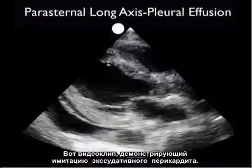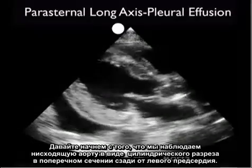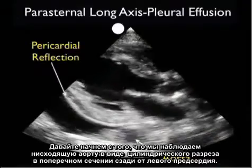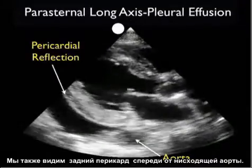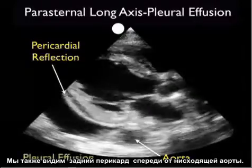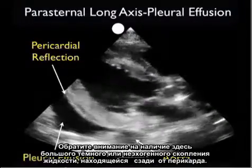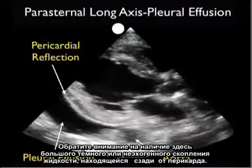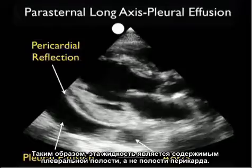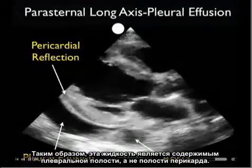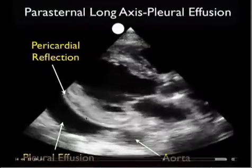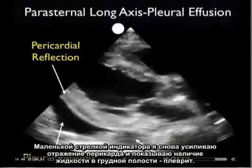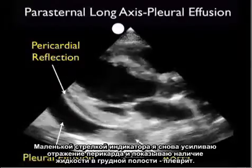Here's a video clip showing a potential mimic of a pericardial effusion. Let's begin by identifying that descending aorta as a cylinder cut in cross section posterior to the left atrium, and we identified the posterior pericardium coming off just anterior to the descending aorta. Note the presence of a large dark or anechoic fluid collection, but note that it layers out posteriorly to the pericardium. Thus, this fluid is within the pleural cavity and not within the pericardial cavity. With a small indicator arrow, I'm reinforcing the pericardial reflection and the presence of the fluid within the thoracic cavity — a pleural effusion.